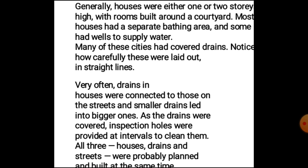Their drainage system was very well developed. A small drain from each house carried the wastewater from the kitchen or bathing area to the main drainage system on the side of the road. The main drainage carried the wastewater to the fields for irrigation. This drainage system was covered, and if a drain got jammed or choked, they would remove the cover and carry out repairs.